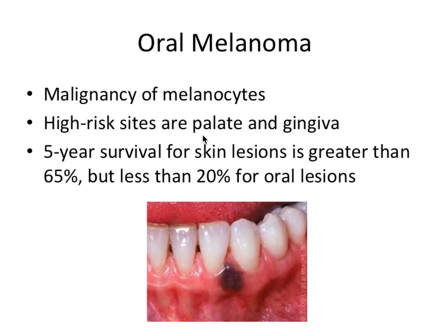Oral melanoma is a malignancy involving melanocytes, hence the name. The high-risk intraoral sites are the palate and the gingiva. In the picture here it's shown on the gingiva — an example of oral melanoma, which usually has a dark purplish-blackish appearance. The five-year survival for skin lesions is greater than 65%, but less than 20% for oral lesions — unfortunately quite low.